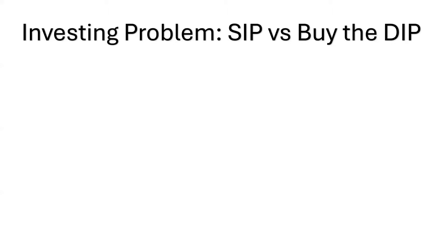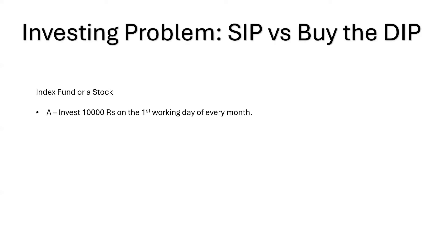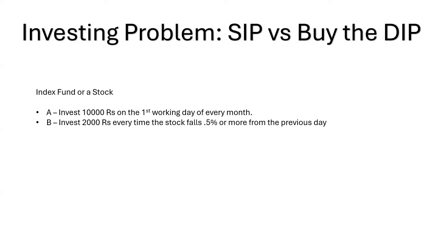In this video we are going to solve an interesting investing problem using SQL. The problem statement is whether one should do SIP or they should buy the dip. We have an index fund or a stock and two types of investors: A, who invests 10,000 rupees on the first working day of every month, and B, who takes active interest in the market and invests 2,000 rupees every time the stock falls 0.5 percent or more from the previous day.